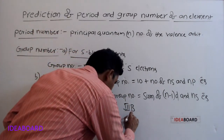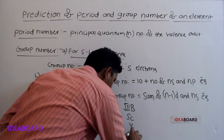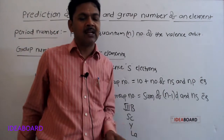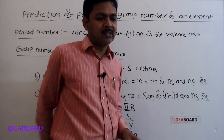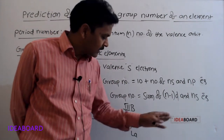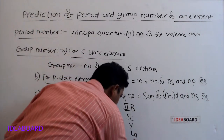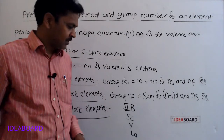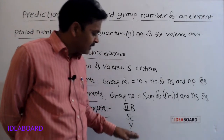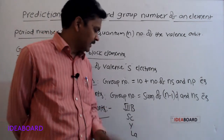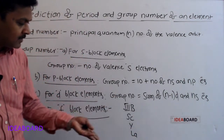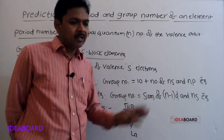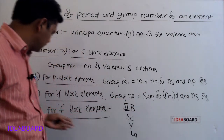In the third B group, the elements are scandium, yttrium, and lanthanum. After lanthanum, 14 elements are there — they are called lanthanides. Next, actinium is there. After actinium, the 14 elements coming after actinium are called actinides. So all the lanthanides and actinides are placed in the third B group. F block elements are nothing but lanthanides and actinides only.